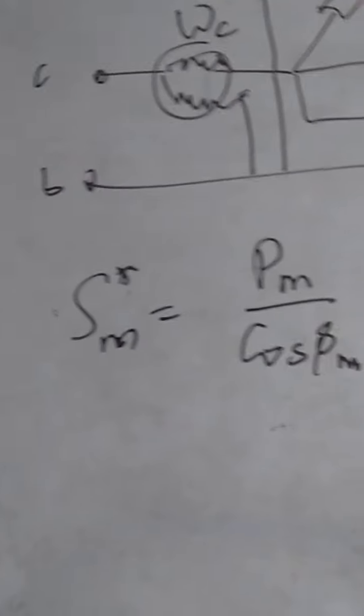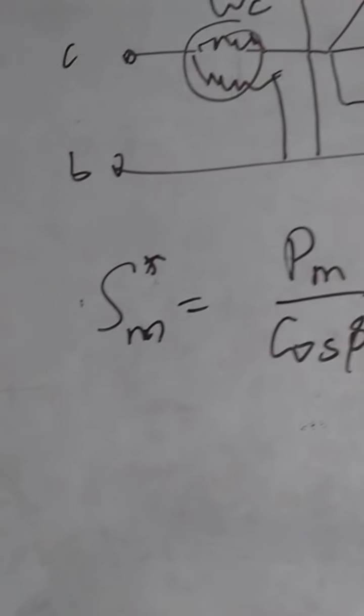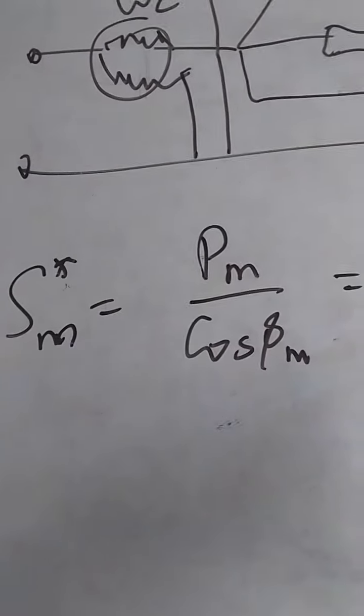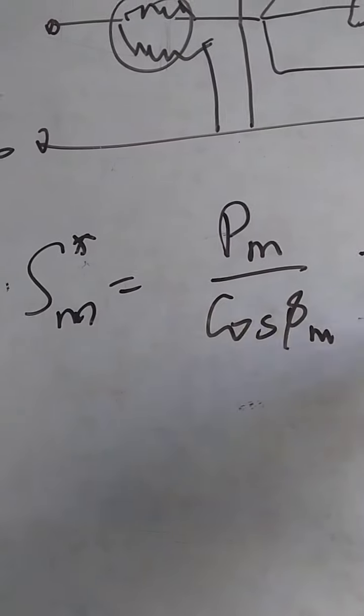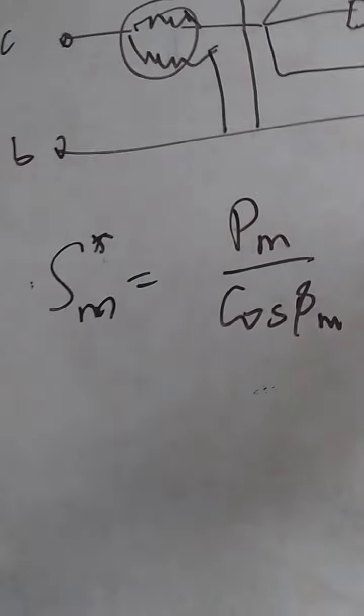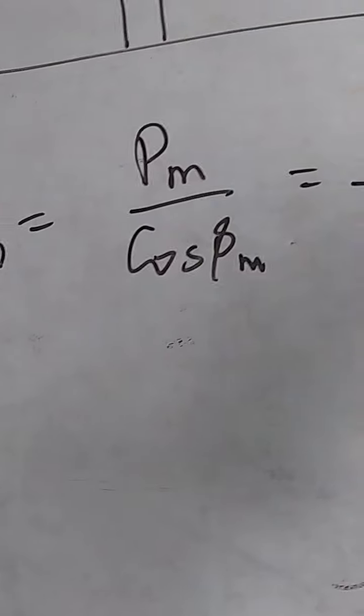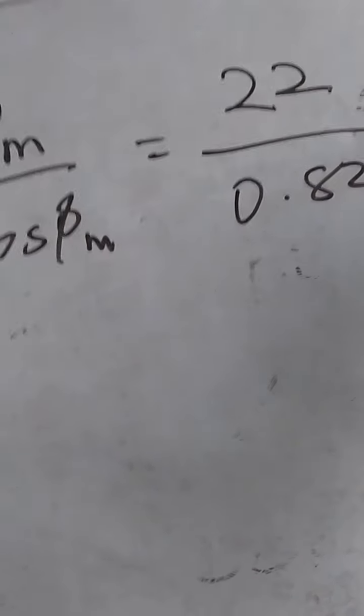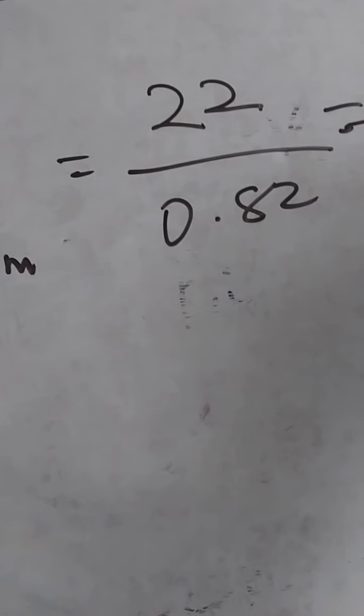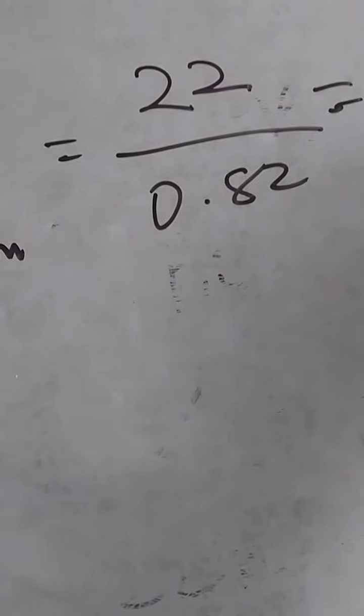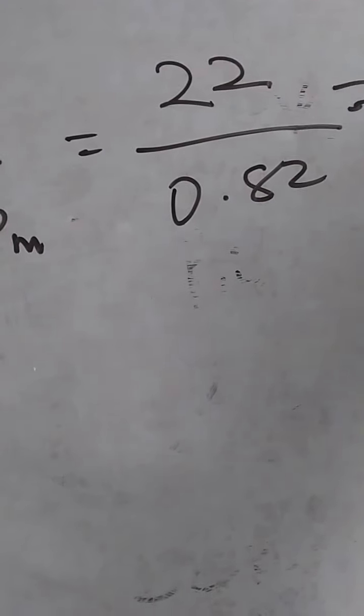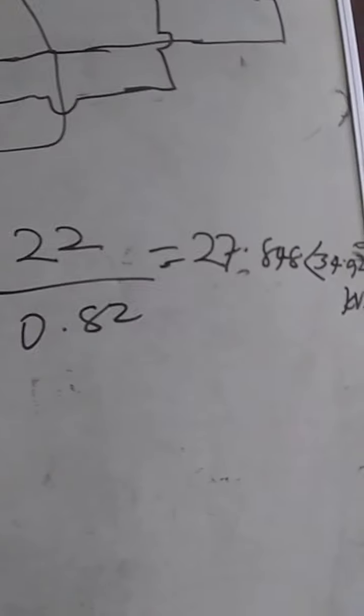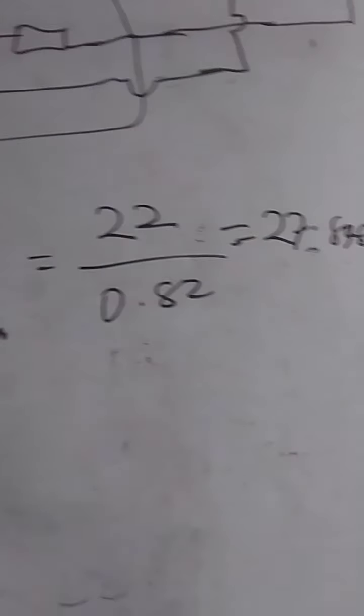We calculated it to be 22 divided by the power factor for the motor, which is 0.82. That gives us 27.848 at angle 34.92 degrees KVA. That is the capacity of that motor.